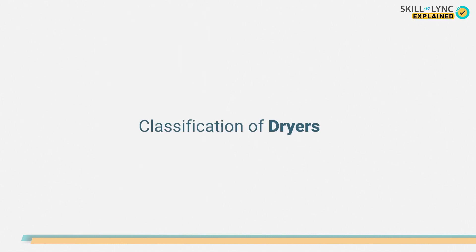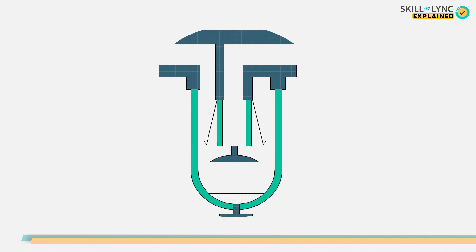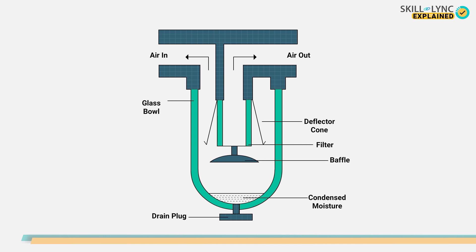Dryers remove moisture from the air via different processes, according to which they are classified. The most simple type consists of an air filter and a water trap. The working of such dryers is also simple.